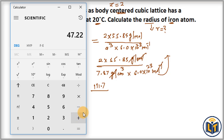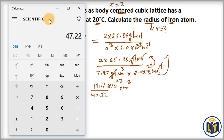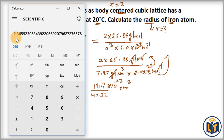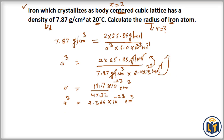The exponent 10 to the power 23 moves to the numerator and becomes negative, giving 10 to the power minus 23. Dividing 111.7 by 47.22 gives 2.366. Therefore, a-cubed equals 2.366 times 10 to the power minus 23 centimeters cubed. This is the volume of the unit cell.